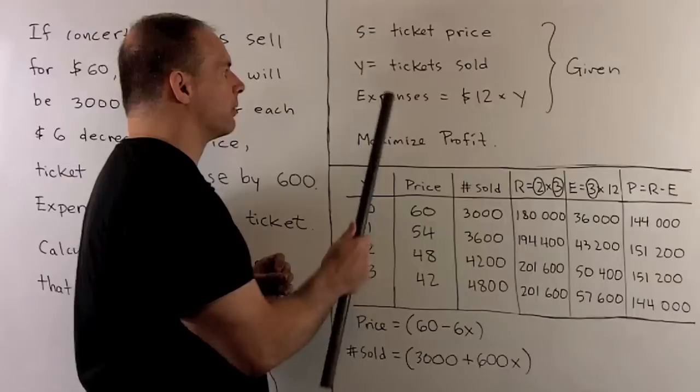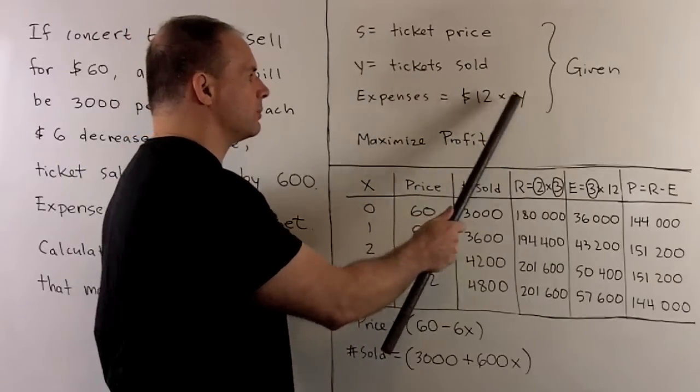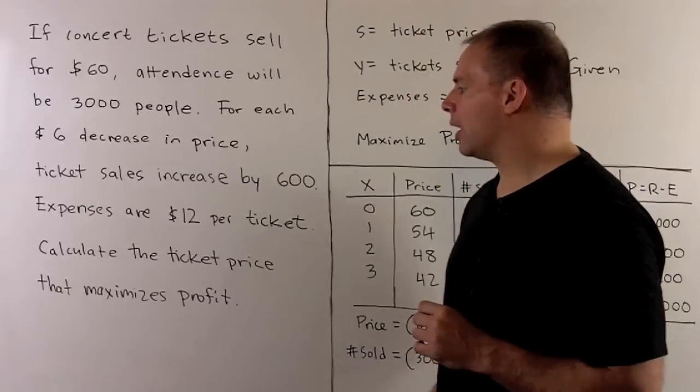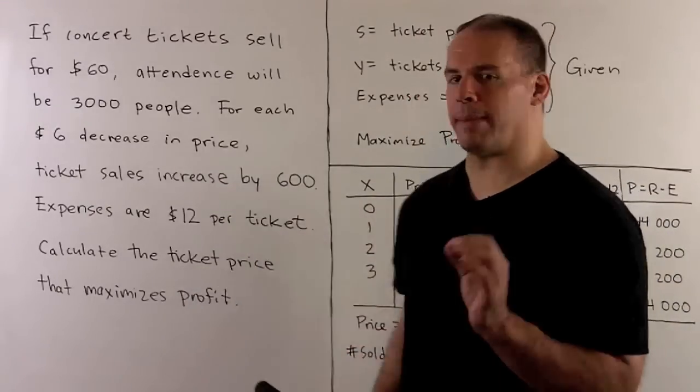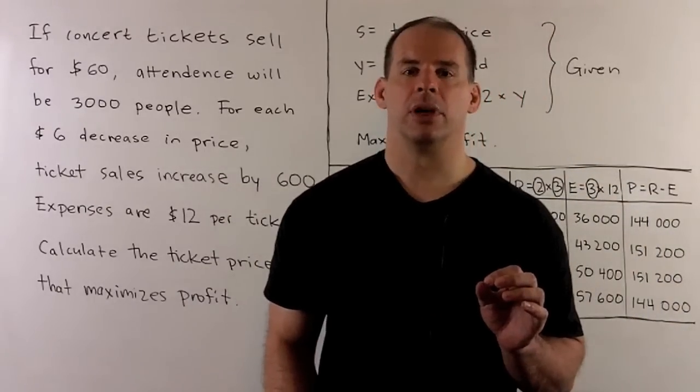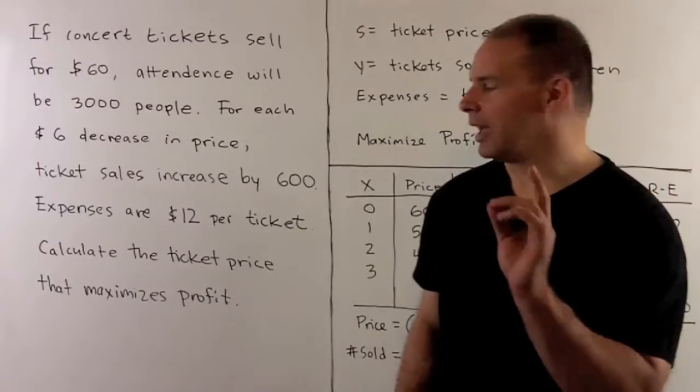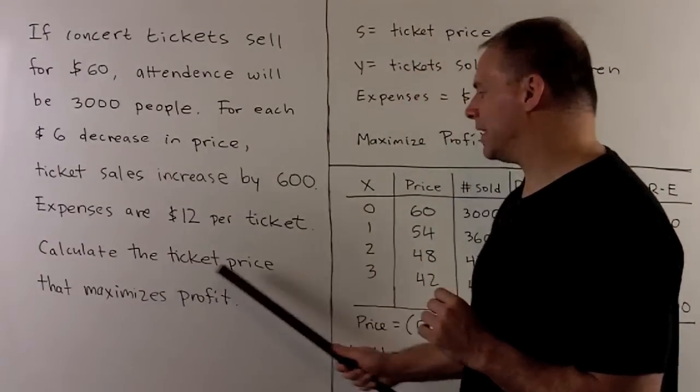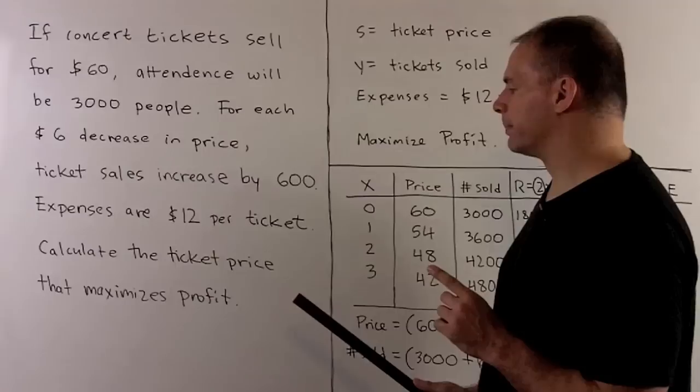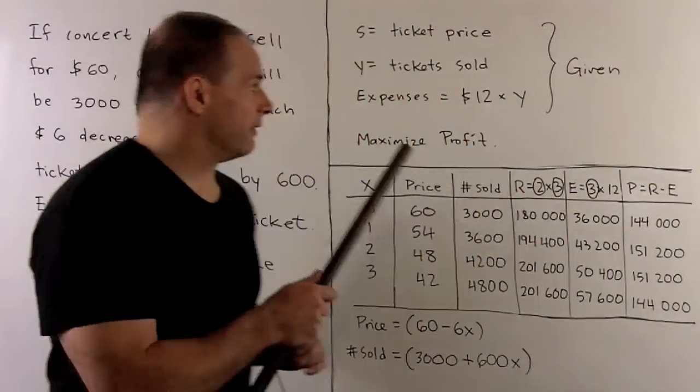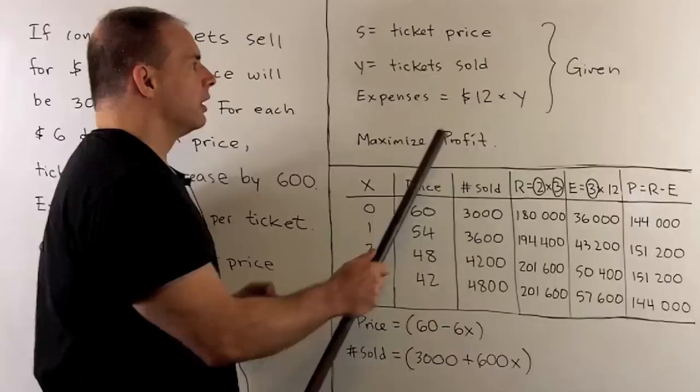I have expenses of $12 per ticket, so that means total expenses are just $12 times the number of tickets sold, or 12 times y. Finally, I want to calculate the ticket price that maximizes profit. So the function I want to maximize is profit, and our final answer is going to be in terms of ticket price.